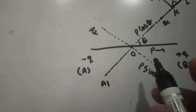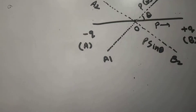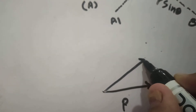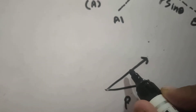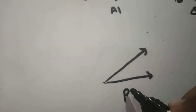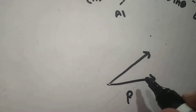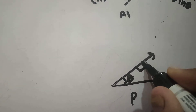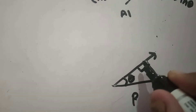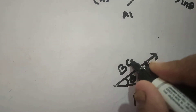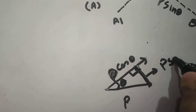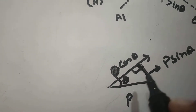Let us solve this again. P is the dipole moment. This component becomes P cos theta because the base of the triangle always gives the cos theta component and the perpendicular component gives sin theta. Now draw a perpendicular over this line. Since the two angles are on this line, this component becomes P cos theta and the vertical component becomes P sin theta.